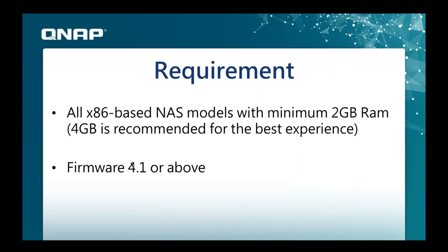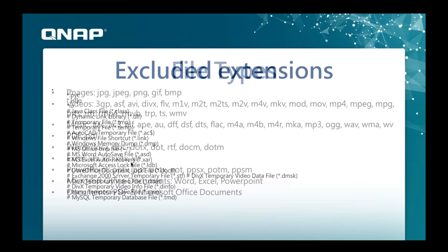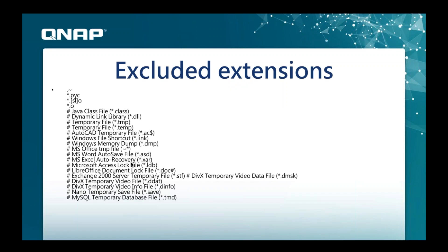Here are the requirements for using QSearch. Currently, all x86-based Intel model NAS units require 2GB RAM, though 4GB is recommended. You must be on firmware 4.1 or above to use the QSearch app. There's also an overview of supported file types, and a list of excluded extensions — mostly temporary or non-common file types that are not commonly used.